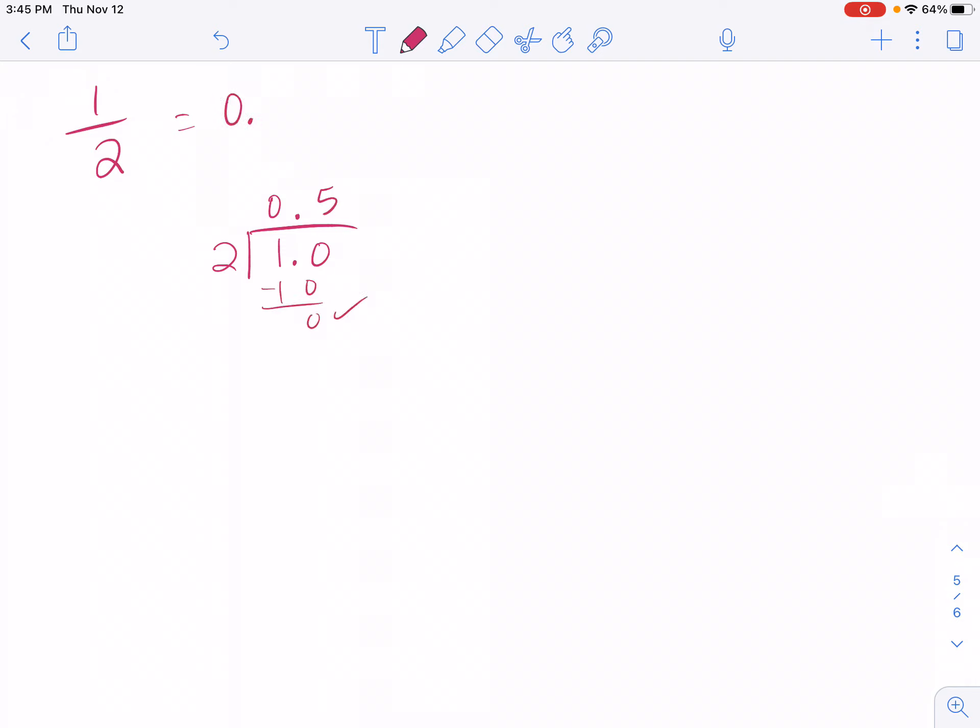All right, so that's going to be 0 and 5 tenths. Now I can just go from decimal to percent. And as we already know, if I'm going from decimal to percent, D to P, I'm moving my decimal two places to the right. So I have to fill in this 0. That's going to get me 50 percent.